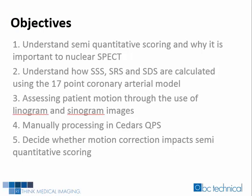The following outlines what will be discussed during this webinar. We will define semi-quantitative scoring and its role in nuclear medicine cardiac SPECT. We will learn how summed stress scoring, summed rest scoring, and summed difference scoring are calculated using a 17-point model. We will learn how to evaluate patient motion using linogram and sinogram images. We will learn how to manually process a non-gated study in QPS, which is quantitative perfusion analysis. And lastly, we will understand how automatic motion correction affects semi-quantitative scoring.